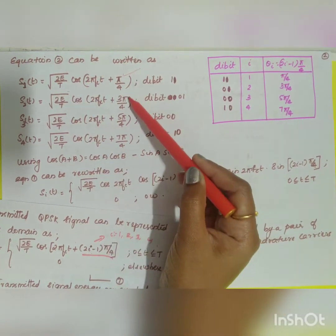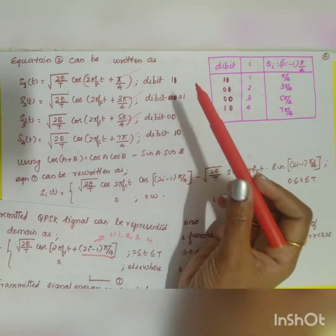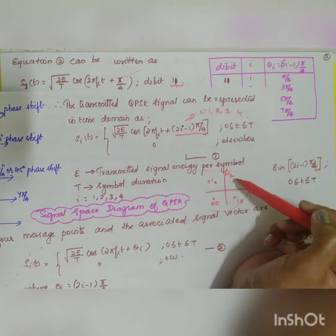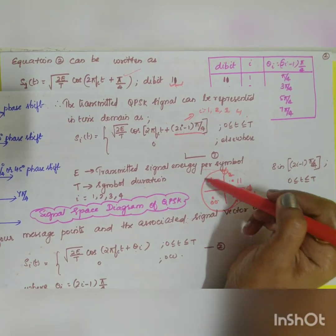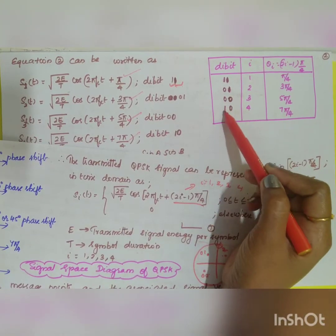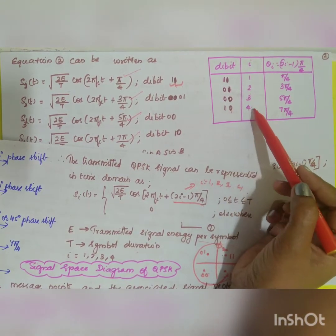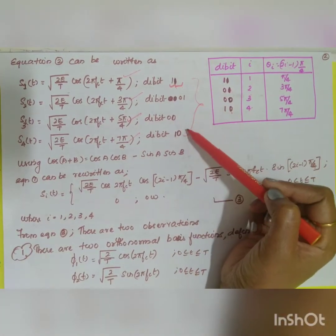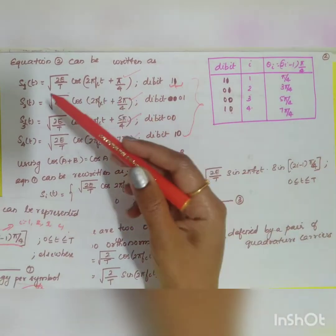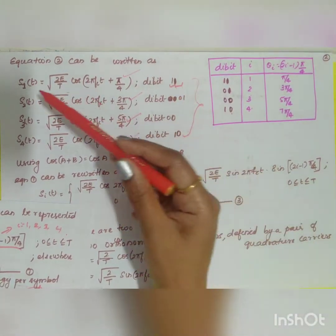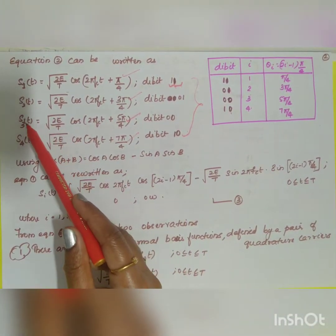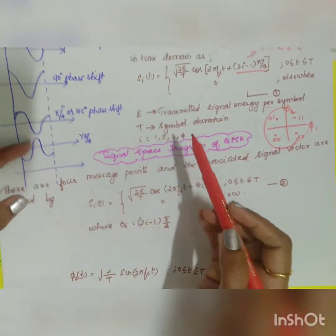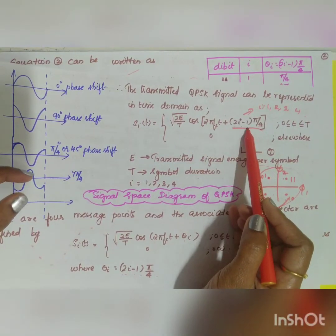For i = 1, 2, 3, 4 the angles are π/4, 3π/4, 5π/4, and 7π/4, representing the dibits 11, 01, 00, and 10 respectively. These give four different signals s1(t), s2(t), s3(t), and s4(t). Now using the cos(a+b) expansion — cos(a+b) = cos(a)cos(b) − sin(a)sin(b) — where a = 2πf_c·t and b = (2i−1)·π/4.